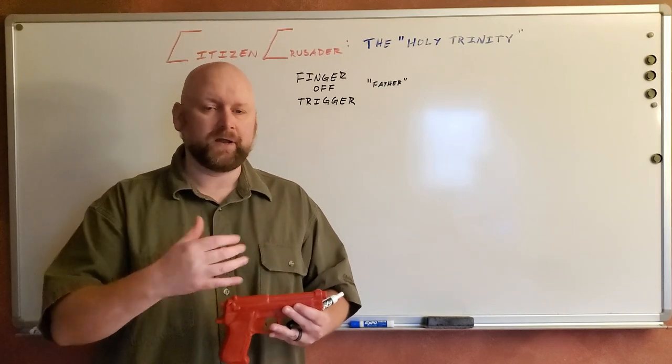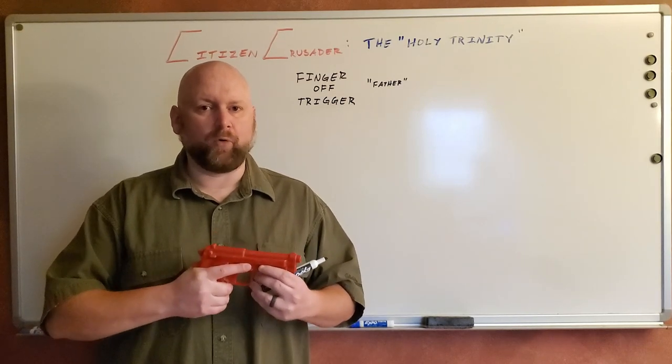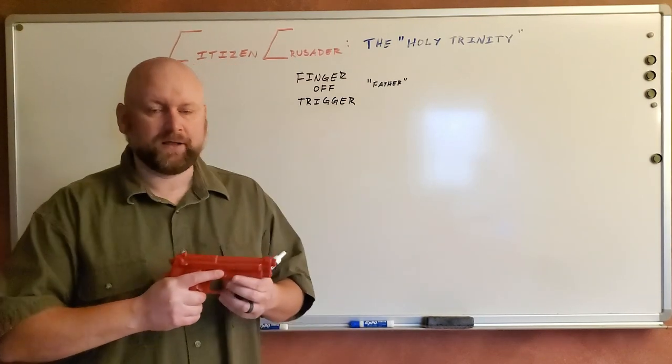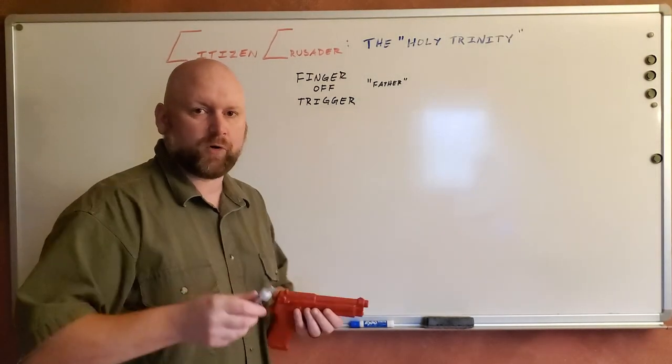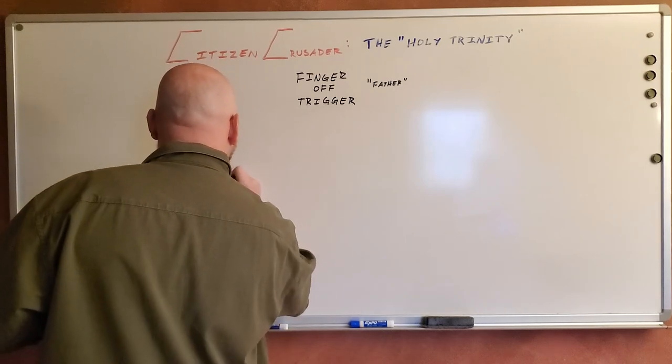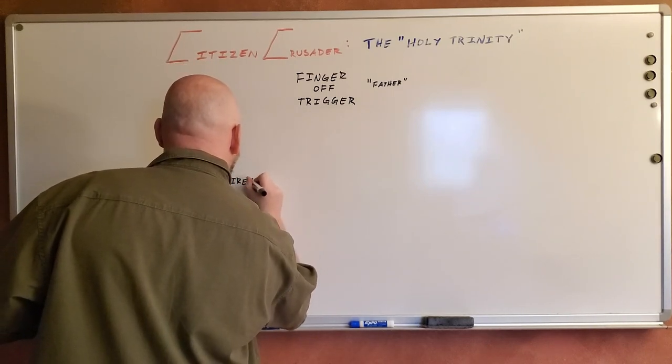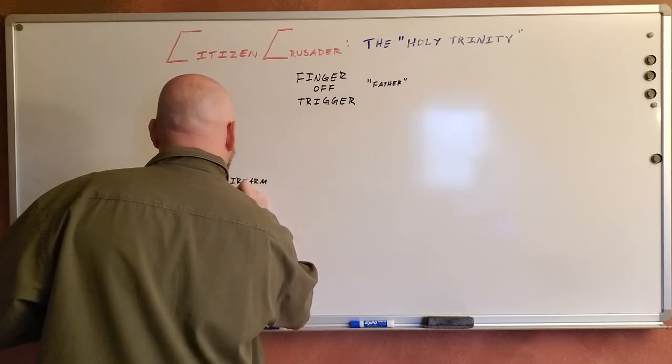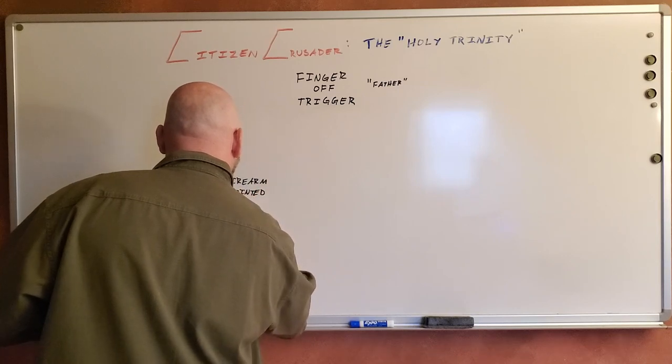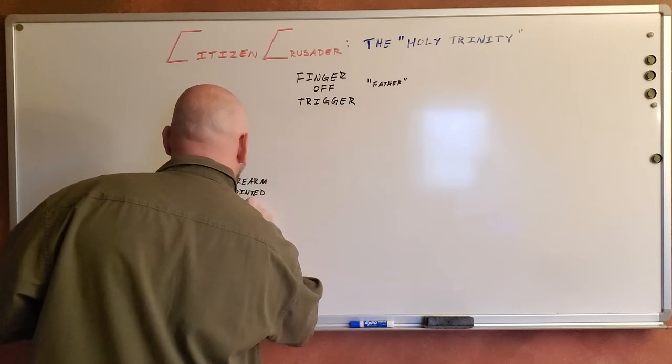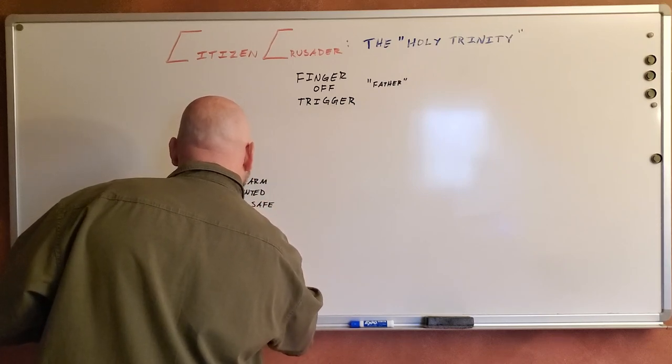The second rule is to keep the firearm pointed in a safe direction. Firearm is always pointed in a safe direction. Let's get it on the board and we'll talk more about what a safe direction is.